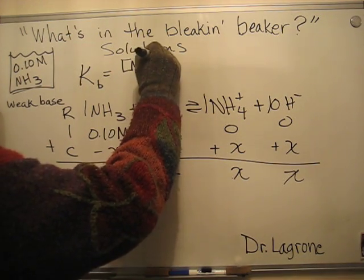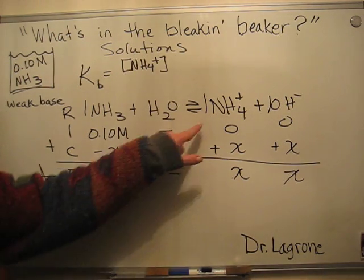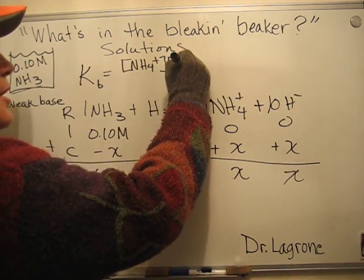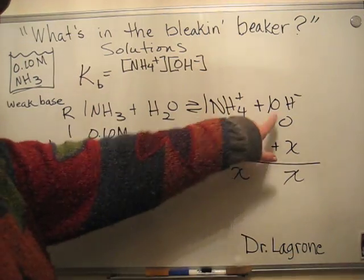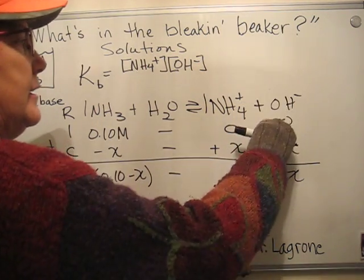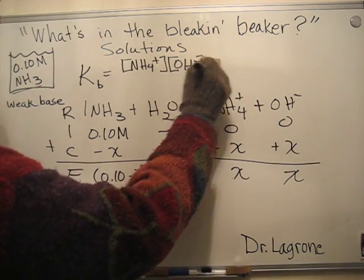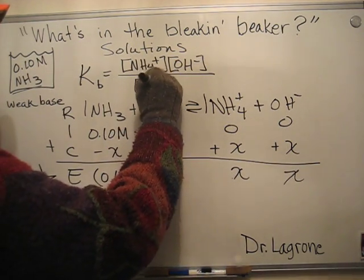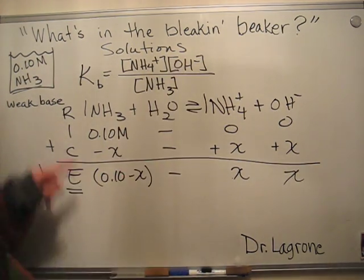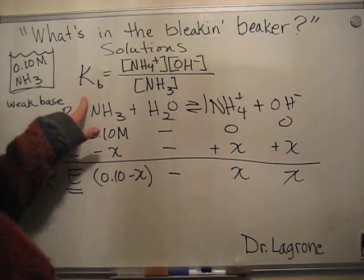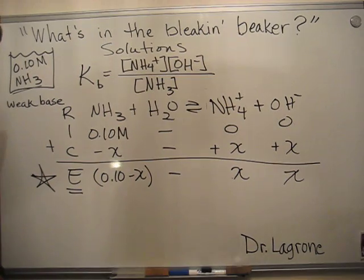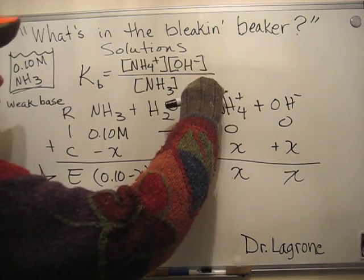Kb equals the concentration of your products, which are the ammonium ion and the hydroxide ion, so it's the concentration of each product raised to its coefficient, which is one, times the concentration of the other product raised to its coefficient, which is one. This is not 10, that's hydroxide over the concentration of ammonia raised to its coefficient one.